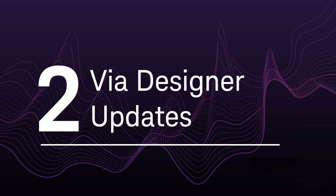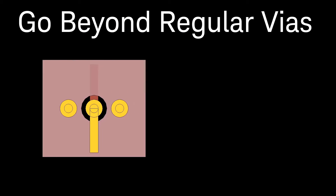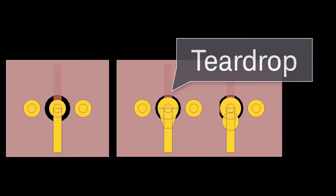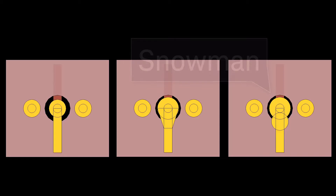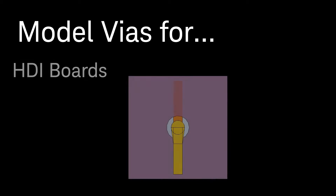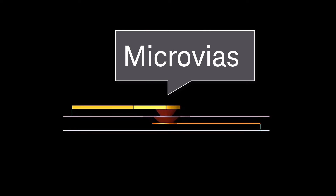Number two: via designer updates. In this update, via designer simplifies the modeling of high-speed vias. You can now add teardrop or snowman pads to your via models, and let via designer show you the impact on the performance. Are you designing an HDI board? In this update, you can easily model your micro vias, staggered or stacked.